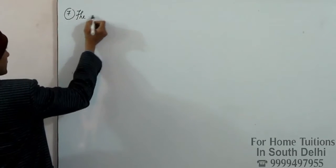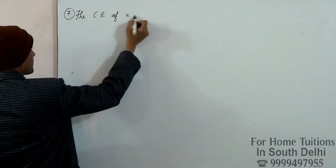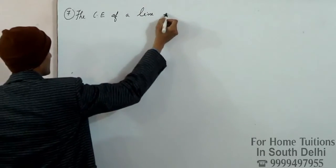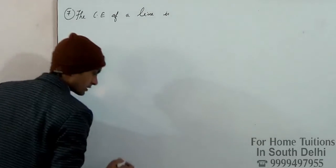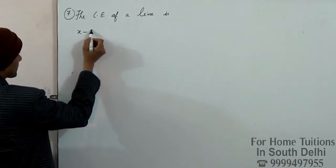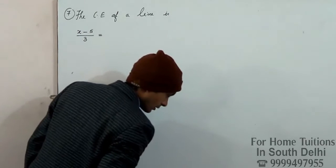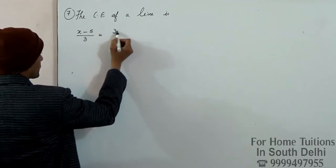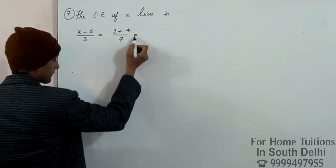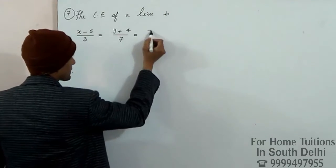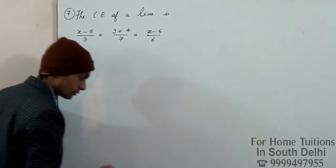The Cartesian equation of our line is: x minus 5 by 3, y plus 4 by 7, z minus 6 upon 2.